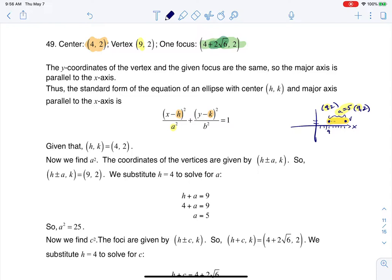So if I'm starting over here at my center, instead of going to this x-coordinate of 4, I'm going to go 2√6 more units. And I don't really know what 2√6 is equivalent to, I could crunch that number on my calculator, but whatever that distance is, that distance there is C.